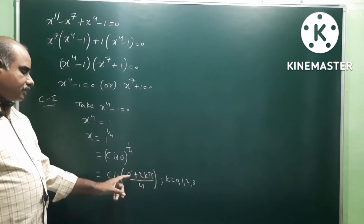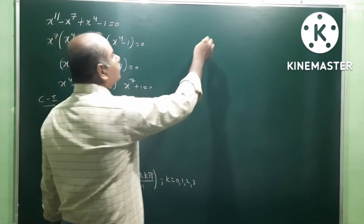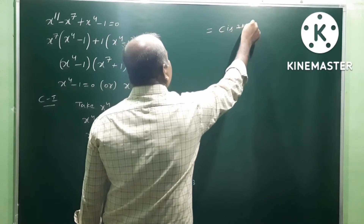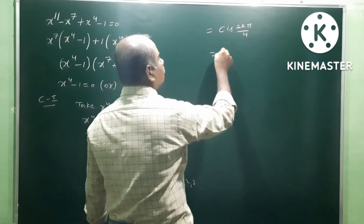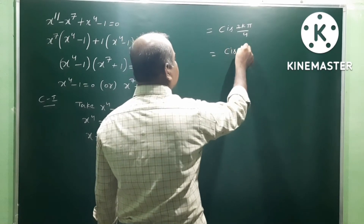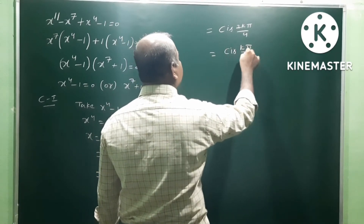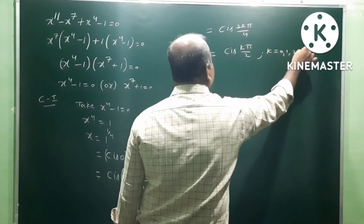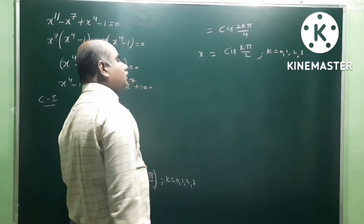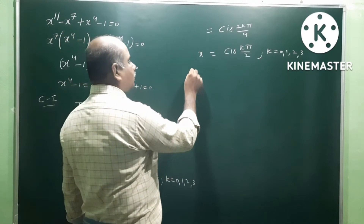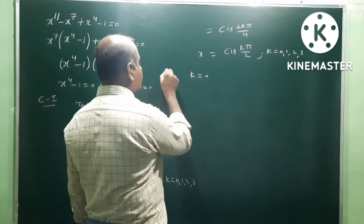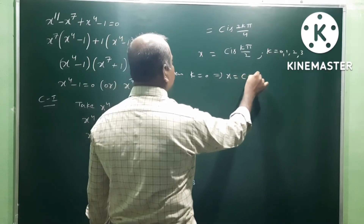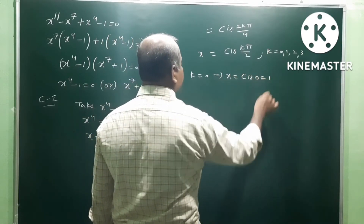So 2kπ plus 0 is simply 2kπ, giving cis 2kπ by 4, which simplifies to cis kπ by 2, where k is equal to 0, 1, 2, 3. Substituting the values: when k is equal to 0, x is equal to cis 0, which equals 1.